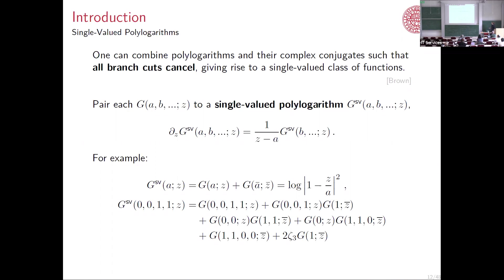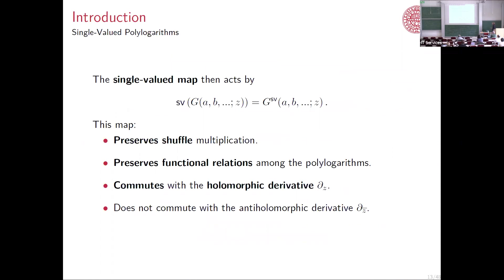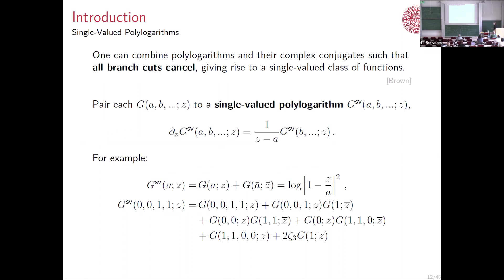So you can pair to each polylogarithm a single-valued polylogarithm GSV, which obeys the same holomorphic differential equation in z but has no branch cuts — meaning you have to add something anti-holomorphic. At weight one, the single-valued log is just log plus its complex conjugate, which equals log of the modulus squared. Since the modulus squared is positive definite, this never hits the branch cut, so clearly it's single-valued. The single-valued map acts by taking any polylog and sending it to its single-valued analog. The map preserves the shuffle and functional relations, and commutes with the holomorphic derivative, but does not commute with the anti-holomorphic derivative.